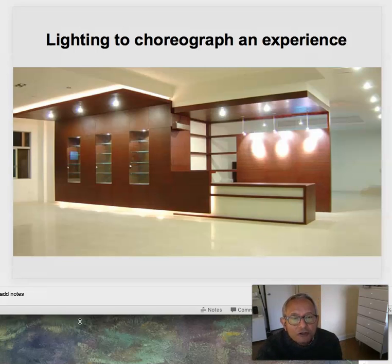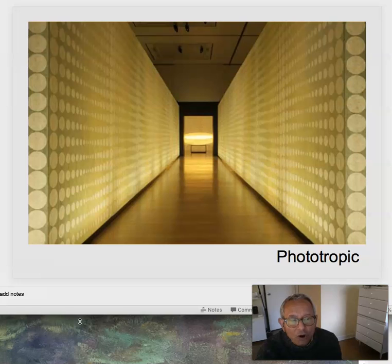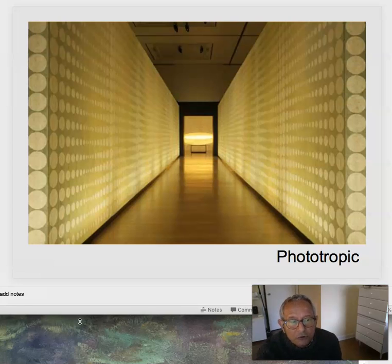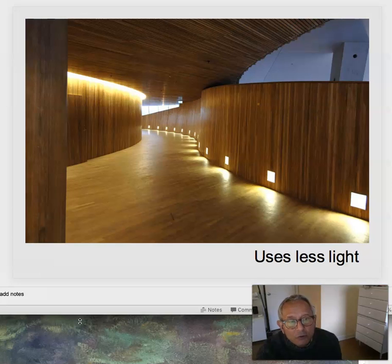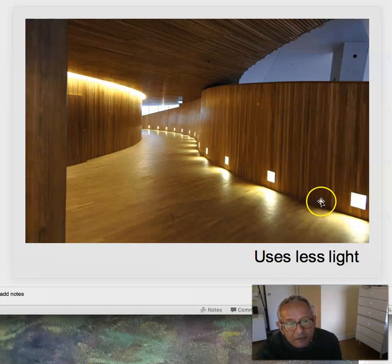Lighting to choreograph an experience: approaching a reception desk where you have light along the way and a higher level of light at the reception desk. Or light along a corridor, drawing us to the end with bright light at the end. This is a corridor where the lighting really wants us to move down and through. Or using less light — just cove light up here and step lights down here — to have us move through an interesting curving space.